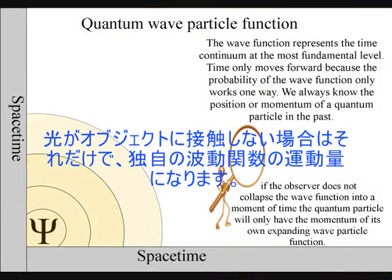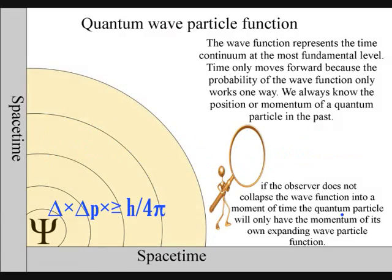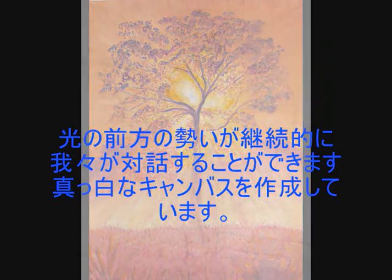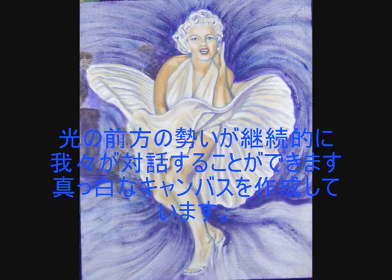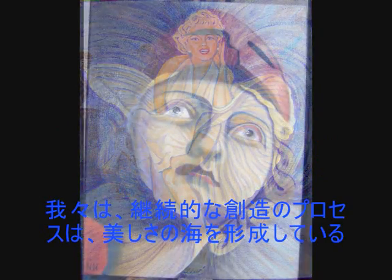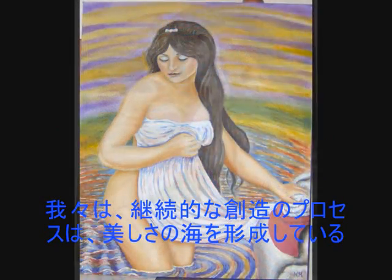If the light does not come in contact with an object, it will only have the momentum of its own wave-function. The forward momentum of light is continuously creating a blank canvas for the observer that she or he can participate in. This is what Socrates called a sea of beauty.